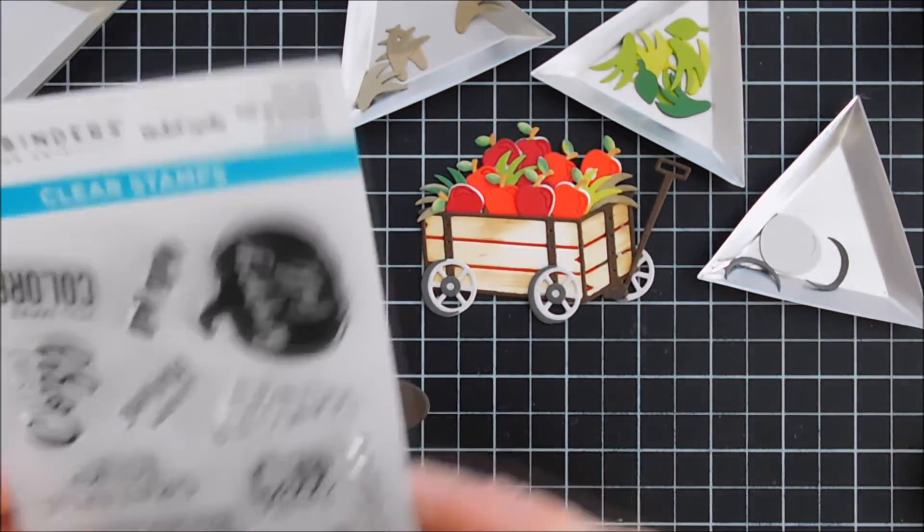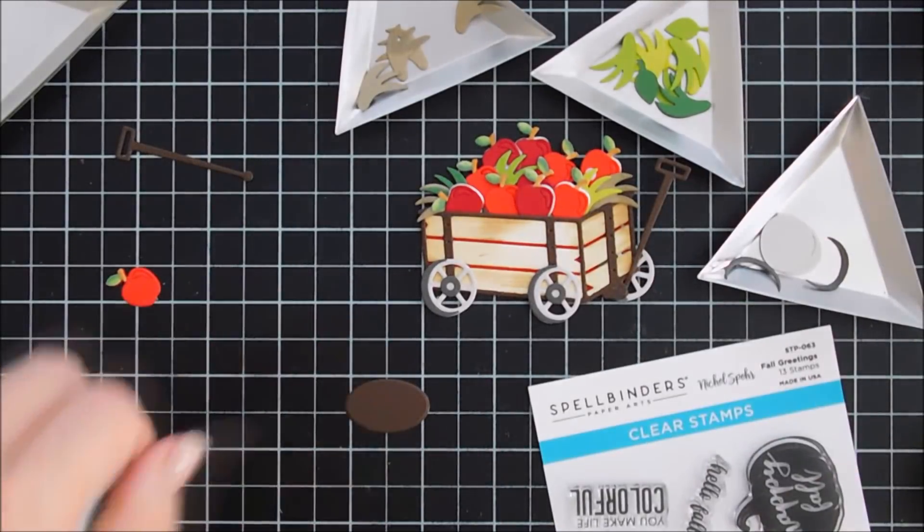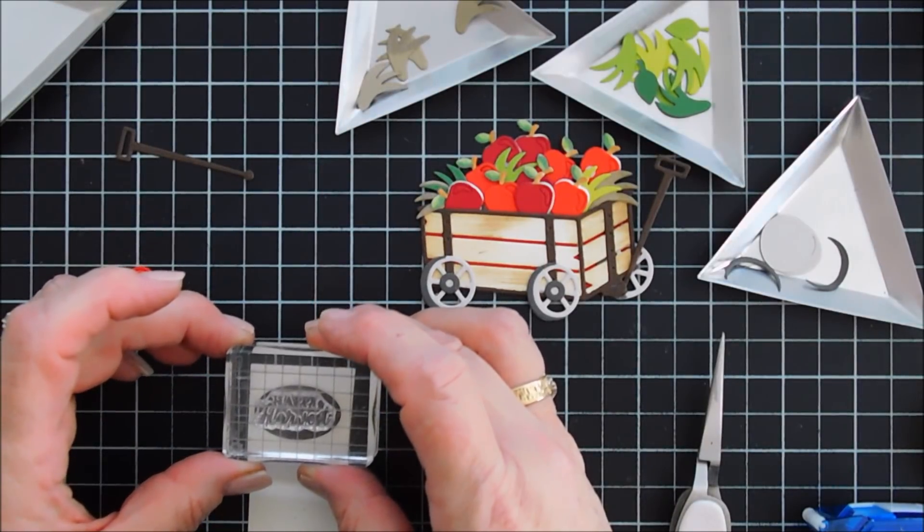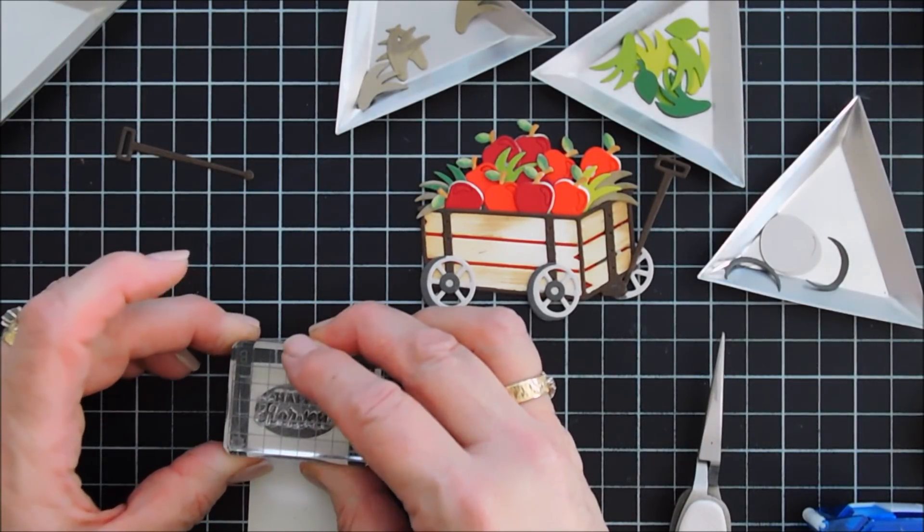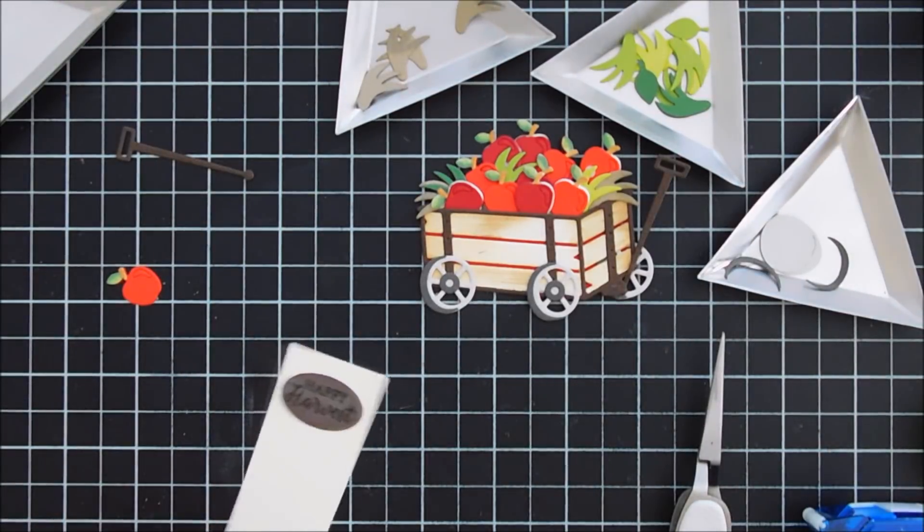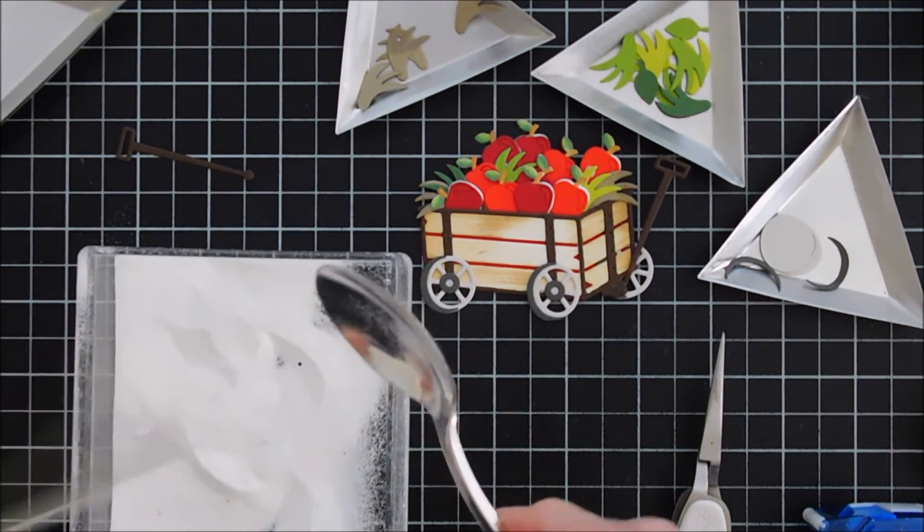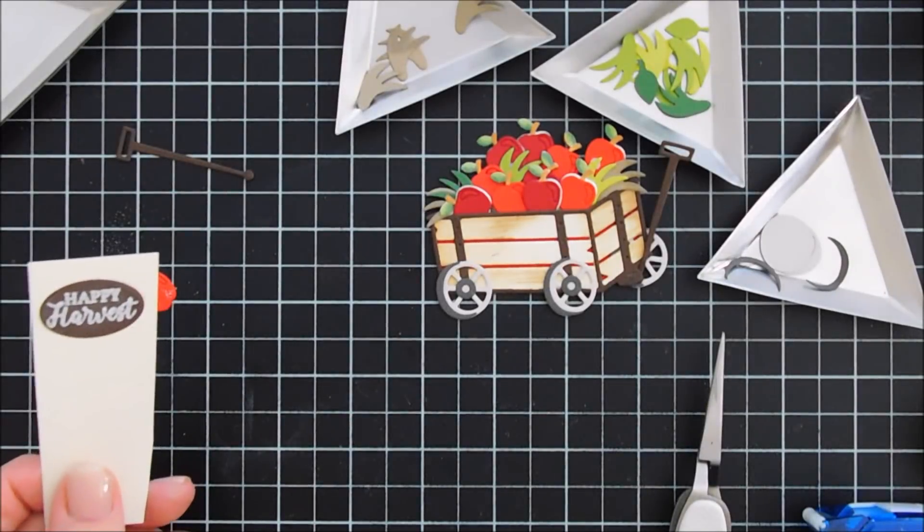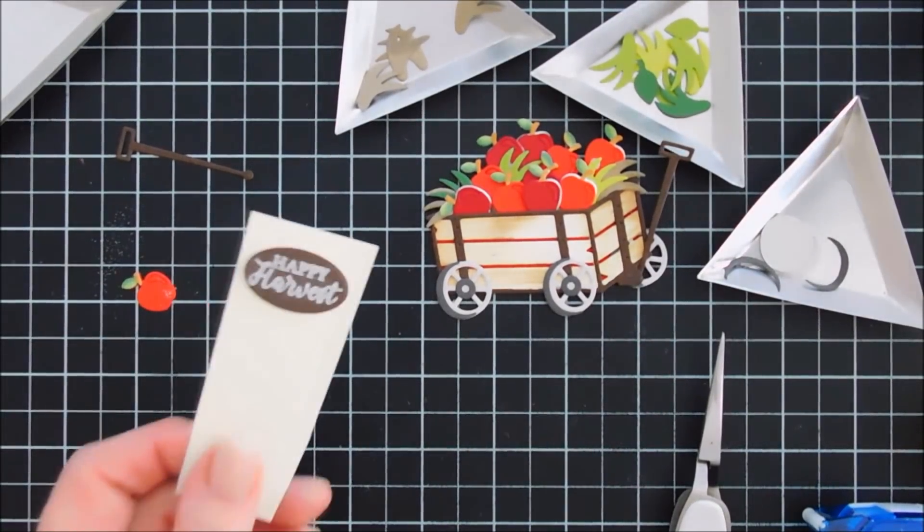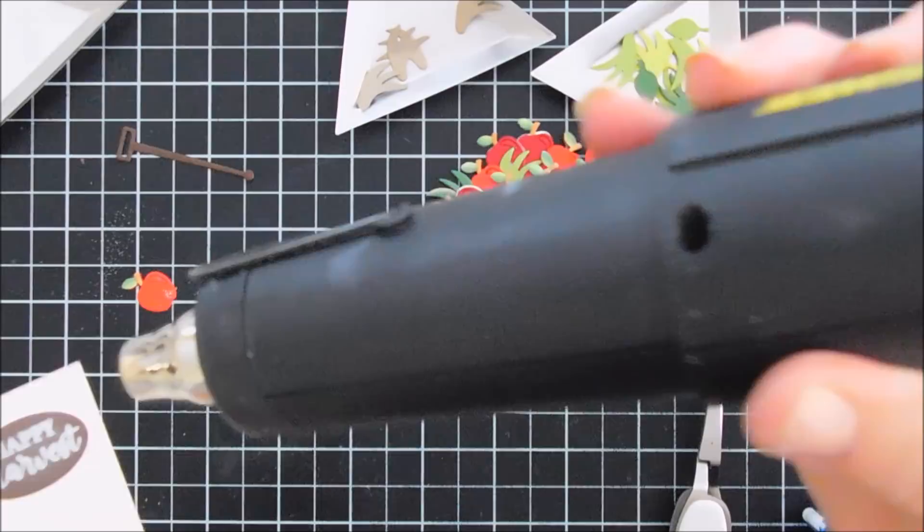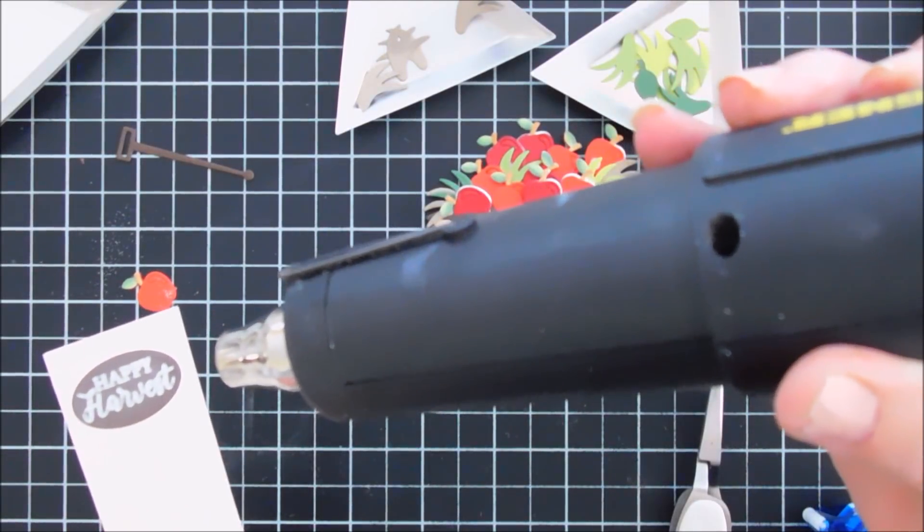And we're going to stamp our sentiment. I'm stamping it on the inside of my oval. You can do this before or after. Before we'll probably give you a little bit more room. I actually taped my oval to some cardstock so I could heat emboss with white embossing powder. That way I don't burn my fingers. You could use your tweezers but there's not too much room in there. I stamped happy harvest. And then we're going to melt that embossing powder.